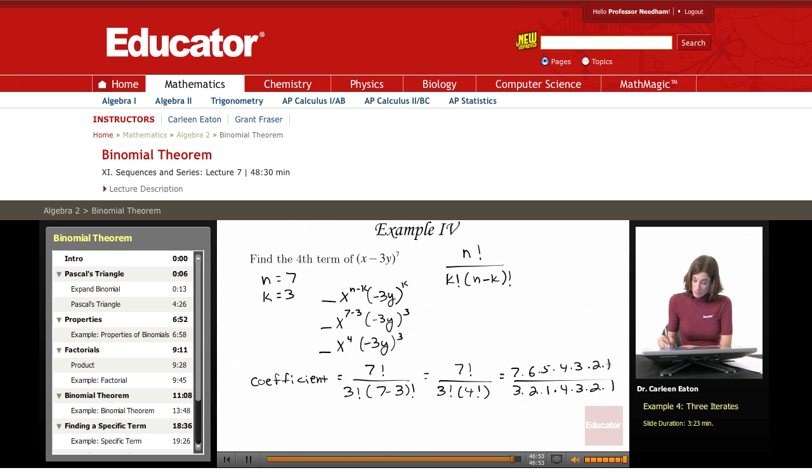Do some canceling out. 1s, 2s, 3s, and 4s are the same. This leaves me with 7 times 6 times 5, divided by 3 times 2 times 1. 6 has common factors here, of 3 and 2. I can just cancel those out. This is 7 times 5, divided by 1. So, just 7 times 5 equals 35.